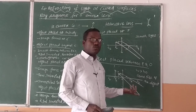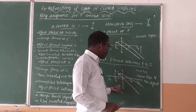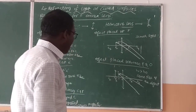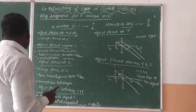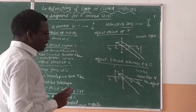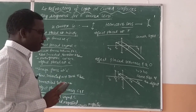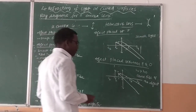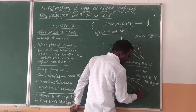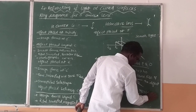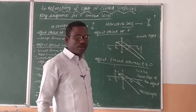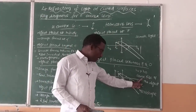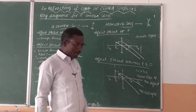When an object is placed between the focus and the optical center, the height of the image is greater than the height of the object. The image is formed on the same side of the object, the image is virtual, and this type of image is formed in a microscope. A microscope is an instrument used to see smaller objects as bigger objects.